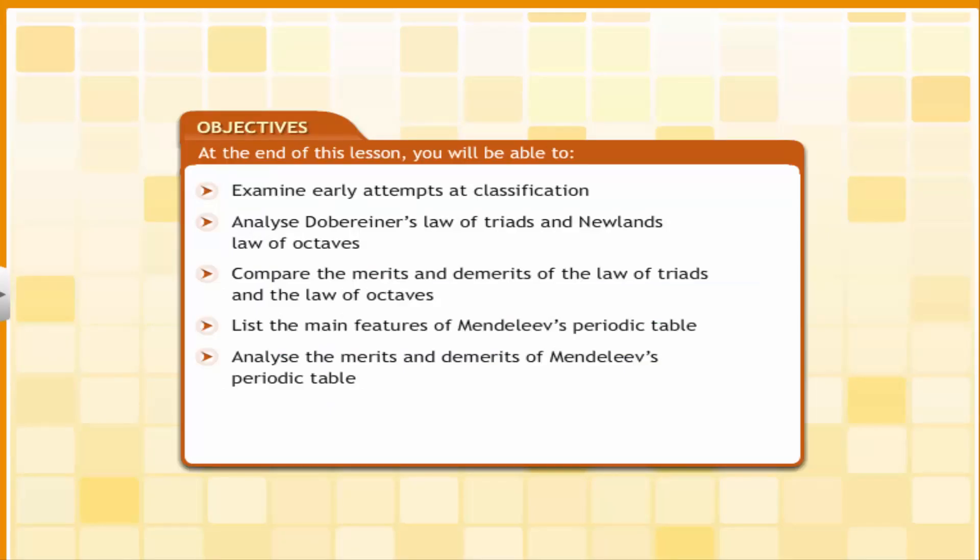In this lesson, we will learn how the attempts to classify elements led to the evolution of the periodic classification of elements. At the end of this lesson, you will be able to examine early attempts at classification, analyze Dobereiner's Law of Triads and Newland's Law of Octaves, compare the merits and demerits of the Law of Triads and the Law of Octaves, list the main features of Mendeleev's Periodic Table, and analyze the merits and demerits of Mendeleev's Periodic Table.